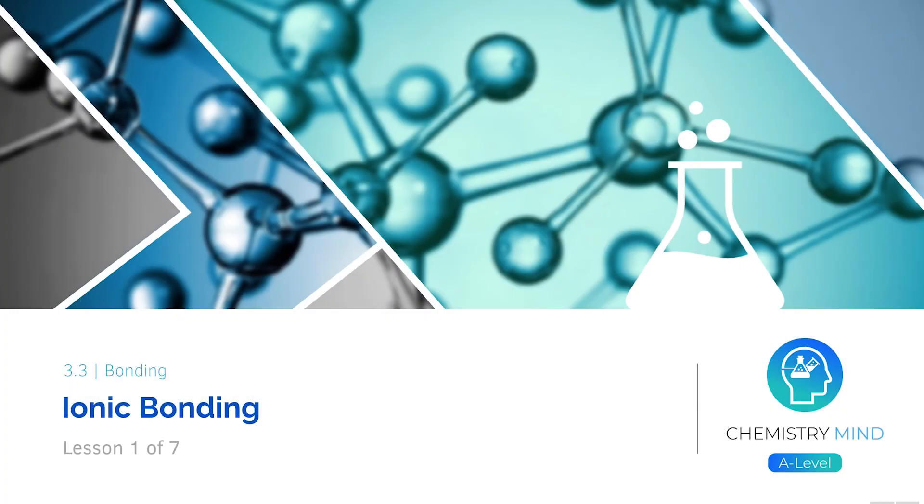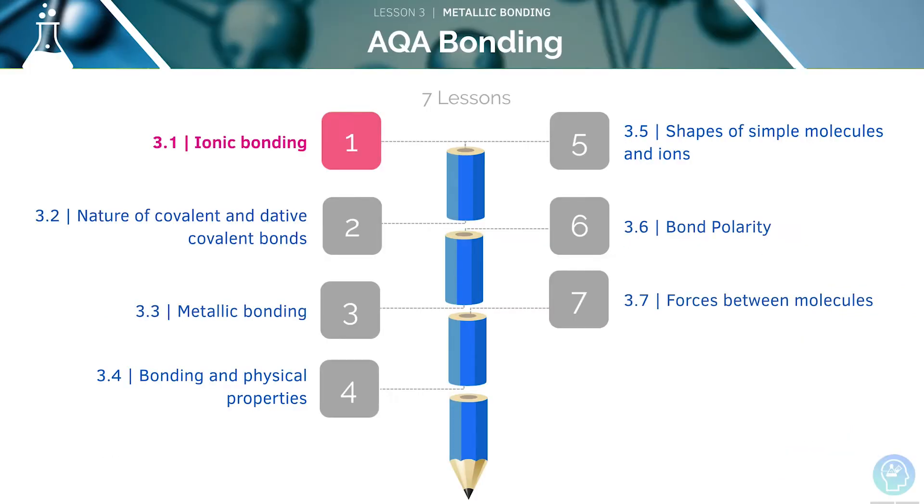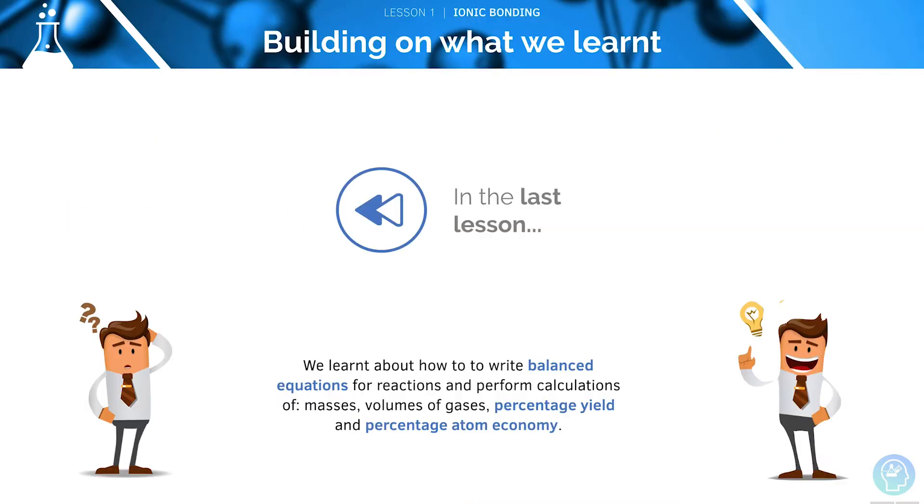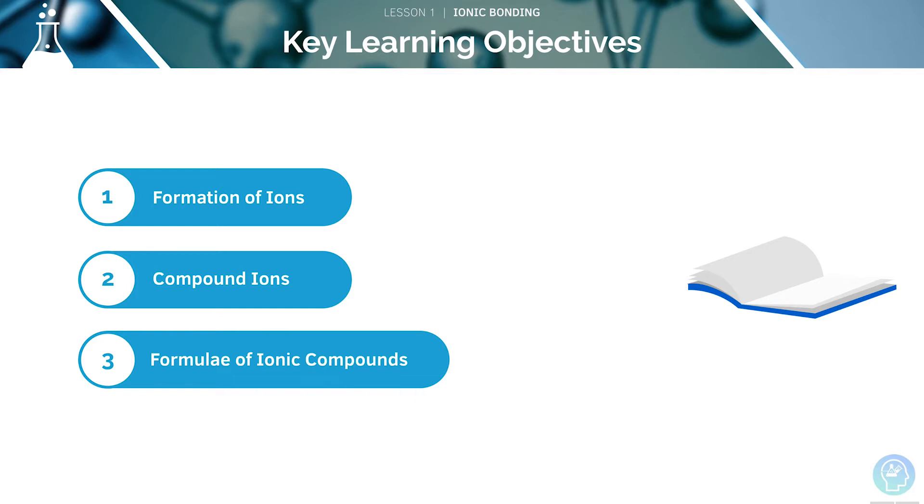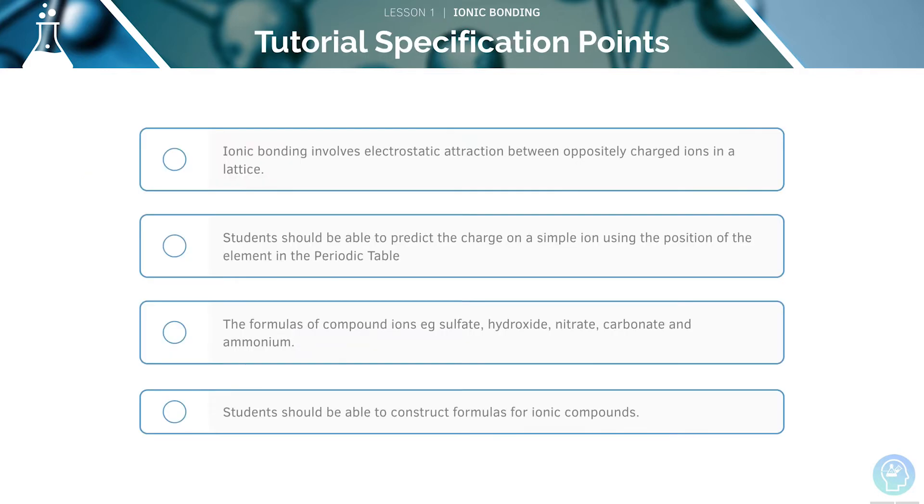Welcome to lesson 1 of 7 in this tutorial covering ionic bonding. This is the first video in our series of 7 lessons on the topic of bonding. In the last lesson, we covered writing balanced equations and performing calculations. Here are the key learning objectives for this lesson. We will start off by looking at the formation of ions, look at compound ions, and finally, we will look at the formulae of ionic compounds. Here are the AQA specification points for this tutorial. Pause the video now to have a read through them before we begin.